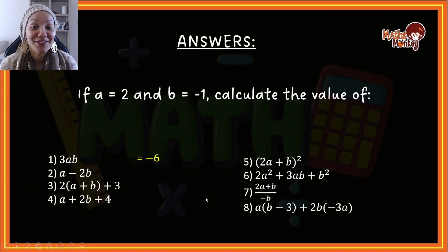The answer to number one: you would have gotten negative six, because I've replaced it so it's 3 times 2 times minus 1. By number two, your answer was four. Again, we've got 2 minus 2 times negative 1. Alright, hopefully you've got two right so far. Then number three, we've got a plus b, which means we will have 2 plus negative 1, and then we multiply that by 2 and add 3 to that answer. So the answer there should be five.